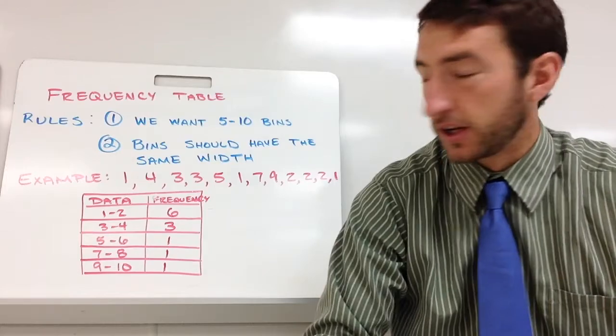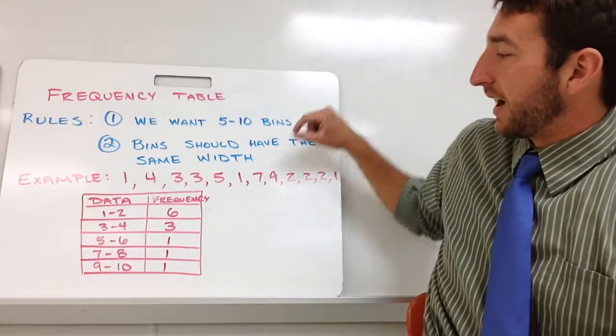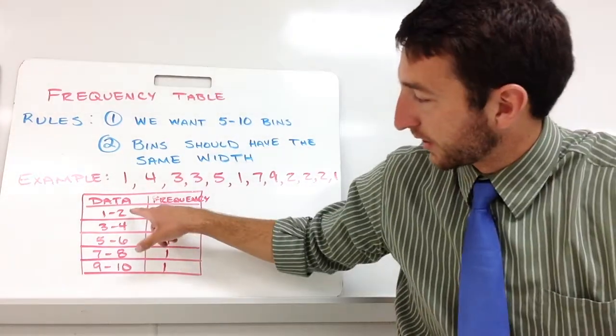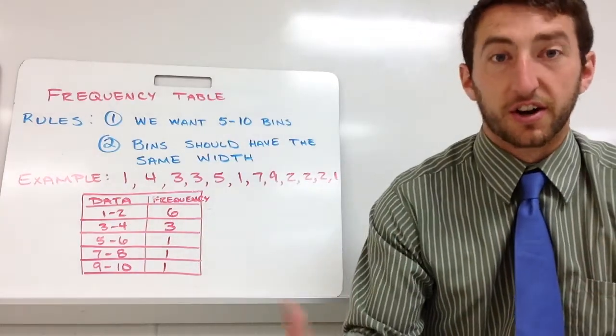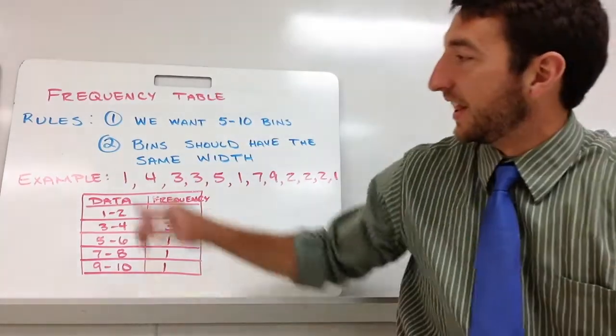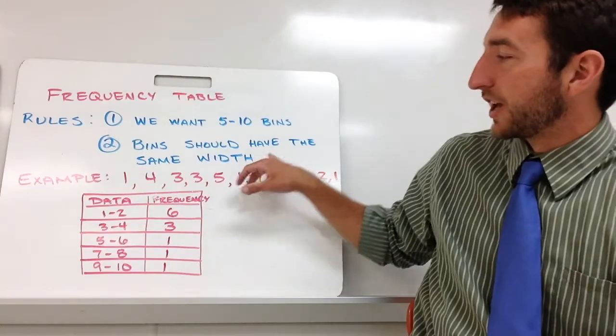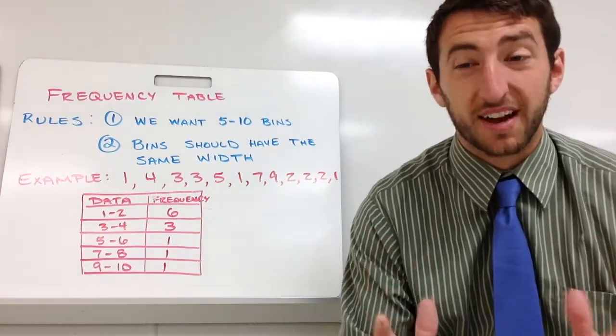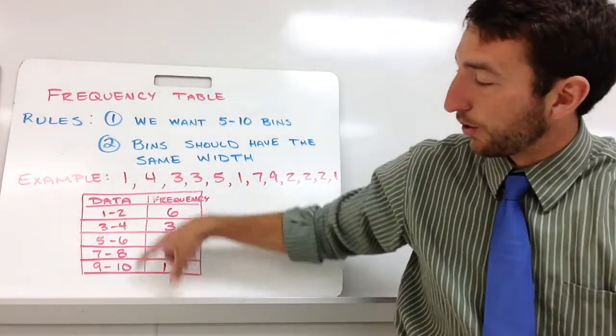There are two rules that we need to know. One is that we want five to ten bins. Bins are these ranges of numbers that our data is going to fall within. And number two is that those bins should have the same width. So they have to have the same width consistent throughout the whole thing.